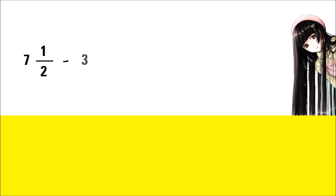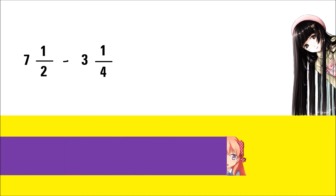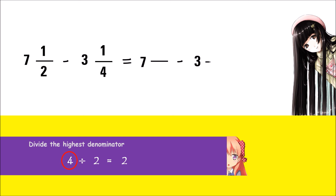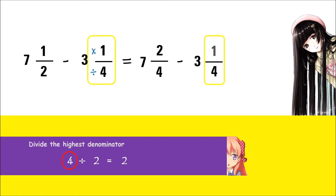Another example is getting the difference of mixed numbers: 7 and 1 half minus 3 and 1 fourth. Make like fractions by finding the LCM of the denominators. The LCM or LCD of 2 and 4 is 4. Copy the whole numbers first, then divide the LCM by the denominator and multiply the answer by the numerator. Before we proceed, make sure the first fraction is large enough to subtract from. For whole numbers, 7 minus 3 is 4. And 2 fourths minus 1 fourth is 1 fourth. Therefore, the answer is 4 and 1 fourth.